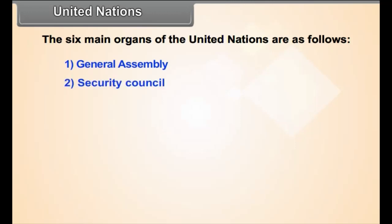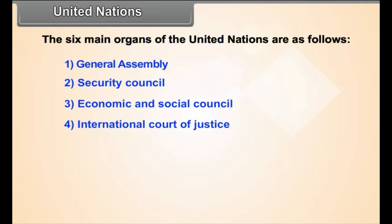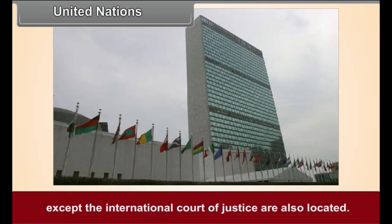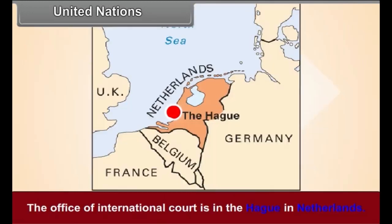The six main organs of the United Nations are as follows. The headquarters of the United Nations are in New York, where the main offices of all the organs except the International Court of Justice are also located. The office of the International Court is in The Hague in the Netherlands.